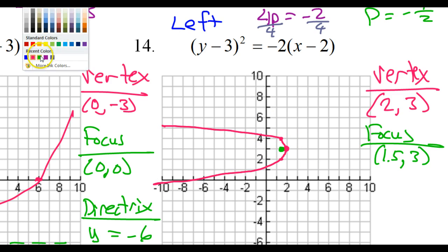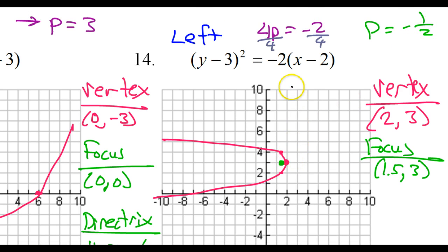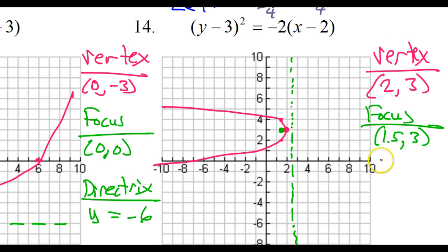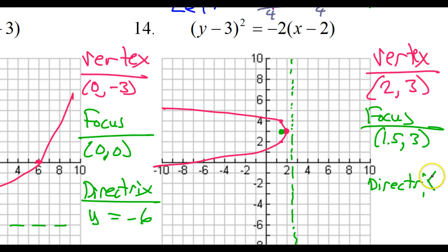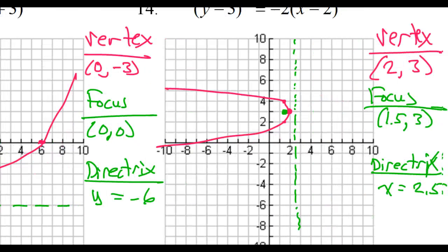My directrix should be p to the right — that's half a unit to the right of the vertex — so the directrix is x equals 2.5. Alright, I think that's going to do it for this lesson. I hope it was helpful. I'll see you on the next video.